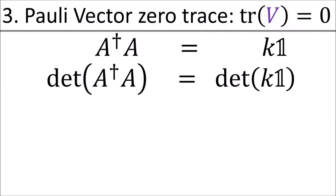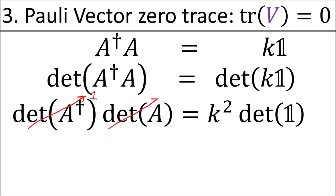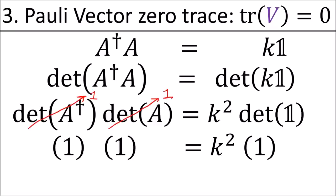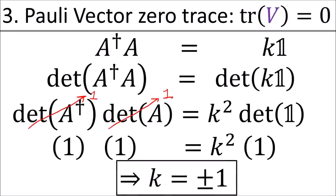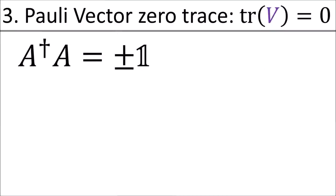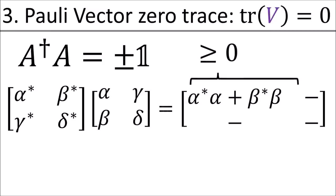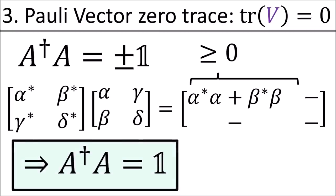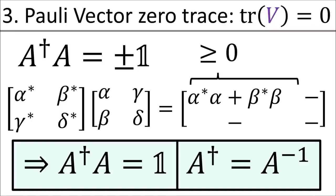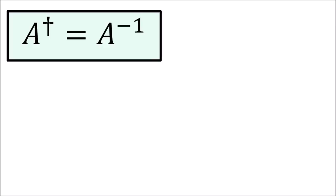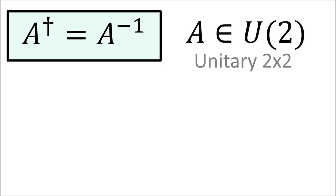Taking the determinant of this formula, we already know from the last step that the determinant of A is 1, so k equals plus or minus 1, meaning A dagger times A equals plus or minus the identity matrix. However, the product A dagger times A is guaranteed to have positive entries along the diagonal. So the only option is that A dagger A equals the identity matrix—in other words, A dagger equals A inverse.